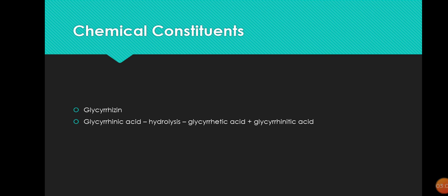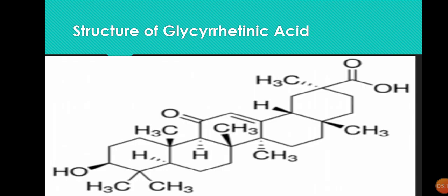Then comes chemical constituents: glycyrrhizin and glycyrrhizinic acid. Glycyrrhizinic acid undergoes hydrolysis to give glycyrrhetic acid and glycyrrhetinic acid. The structure of glycyrrhetinic acid is shown in front of you on the screen.